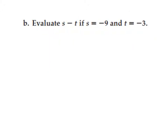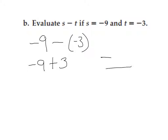Evaluate s minus t if s equals negative 9 and t equals negative 3. I substitute s with negative 9, keep the subtraction sign, and plug in negative 3 for t, using parentheses so I don't confuse the two negatives. Using the additive inverse: negative 9 stays the same, subtraction changes to addition, and negative 3 becomes positive 3. Adding integers with unlike signs means I subtract: 9 on top, 3 on bottom, giving 6. Since 9 has the largest absolute value and its sign is negative, 6 becomes negative 6.